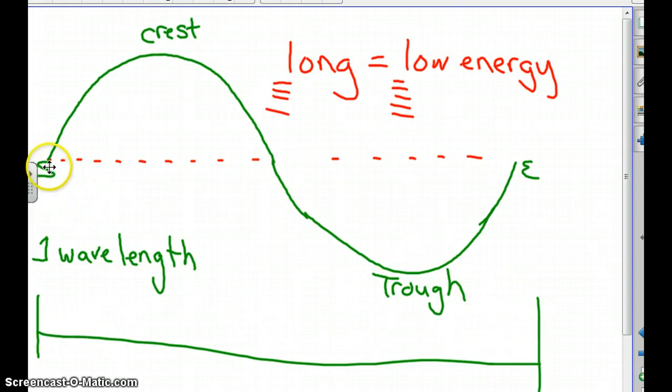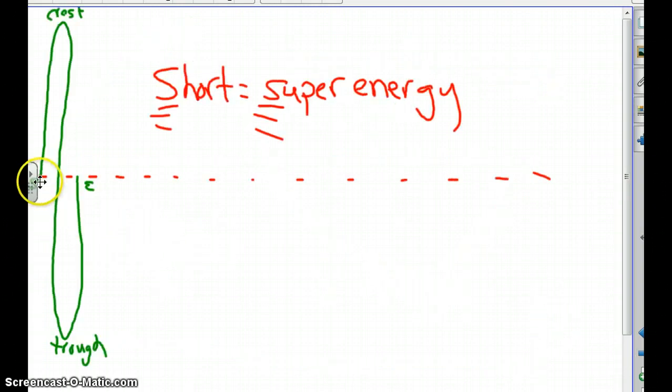A wavelength is from the beginning of one wave to the end of that wave. The crest is the top of the wave, the trough is the bottom. A long wave has low energy, L for long, L for low. If you have a super short wavelength, it has super energy. Short starts with S, super starts with S.